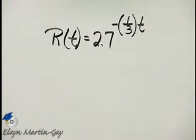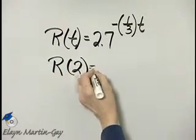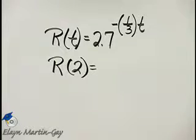To find the probability, we will simply find R of 2. Where did I get the 2 from? We want to know the probability that the CD player will still work two years, so time is 2.